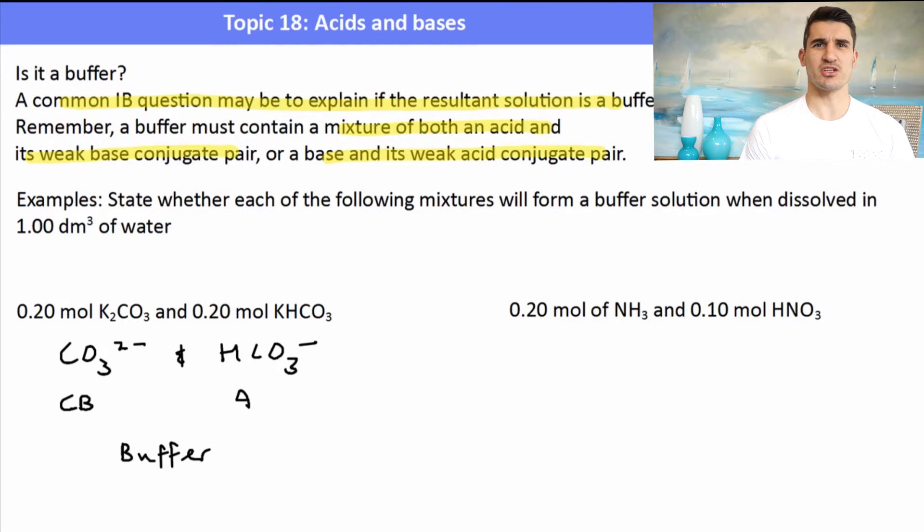The one on the right though can be a little bit challenging. We've got NH3 ammonia and we've got nitric acid. Now are those conjugate pairs? Well no they're not conjugate pairs but they've given us different moles of both of them. So I wonder if that has something to do with it. And in fact it does. Because if we have NH3 that can form ammonium ions in water and if we have HNO3, we know that's a strong acid so that would completely ionize in water to form H3O plus and NO3 minus.